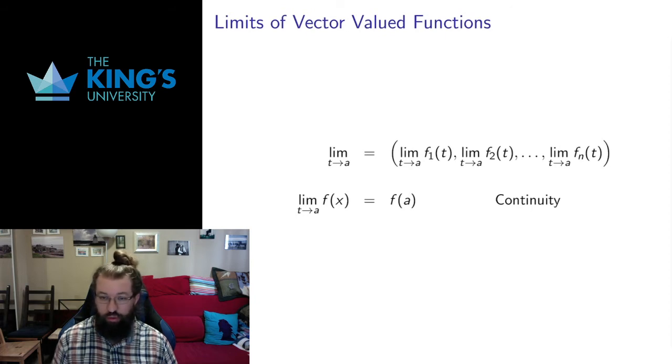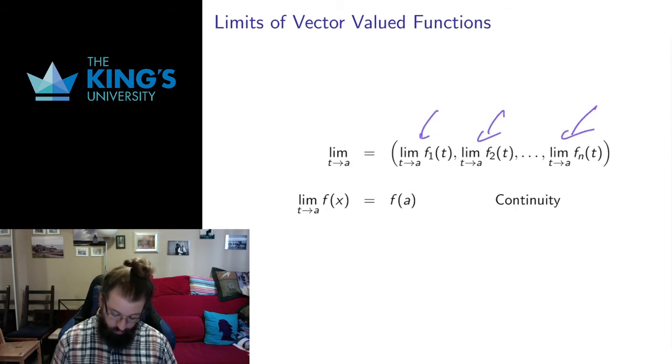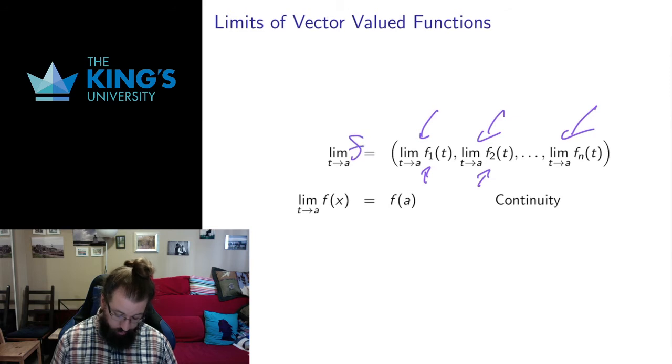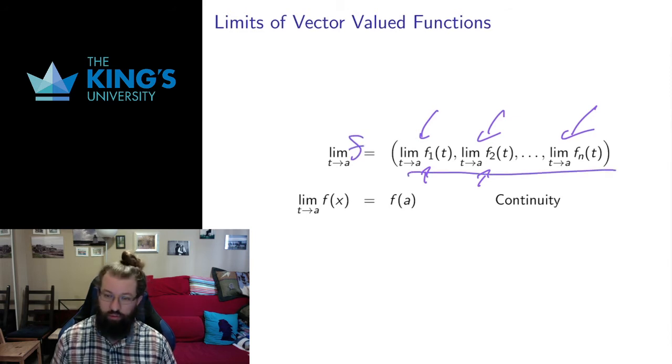For limits of these, we just do the limits component-wise. Each component itself is an ordinary single variable function. This first component, f1, is just a one variable, one input, one output function. f2 is a one variable, one input, one output function. So I can take the limit of all of those things. And so this limit exists, the limit of f exists, if and only if all of these other limits exist. If any of these fail, then this limit fails. All of the pieces have to make sense.